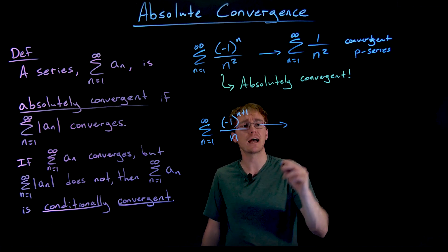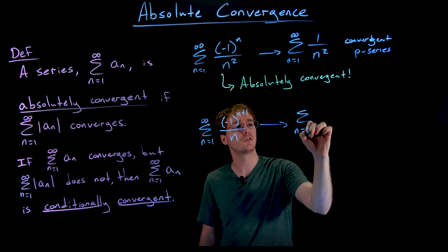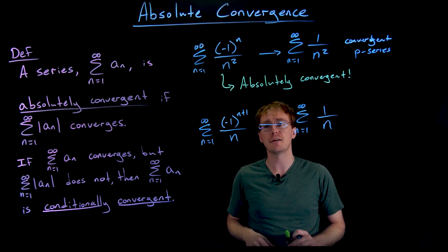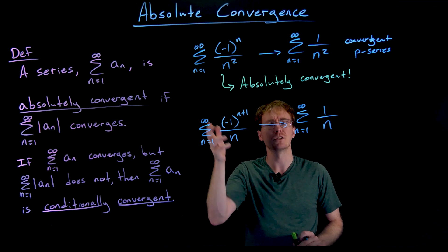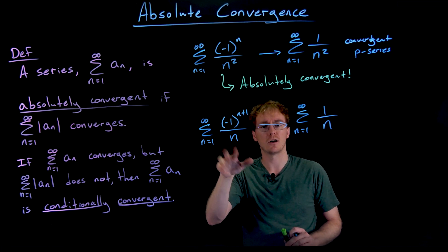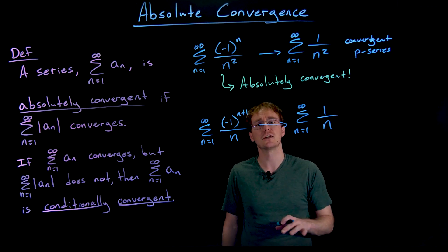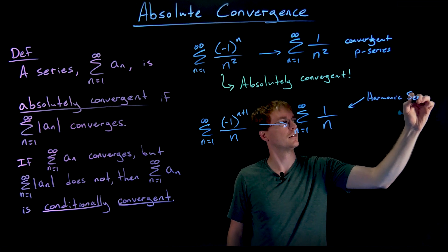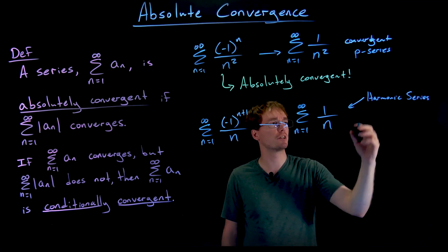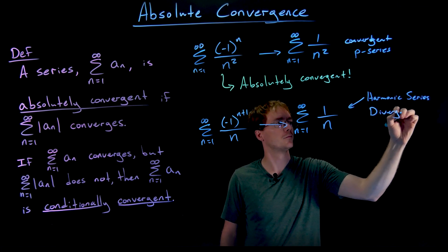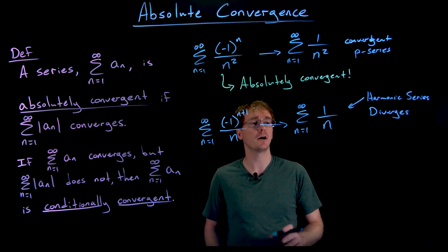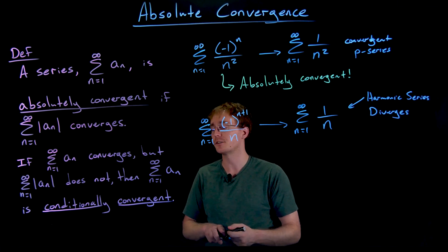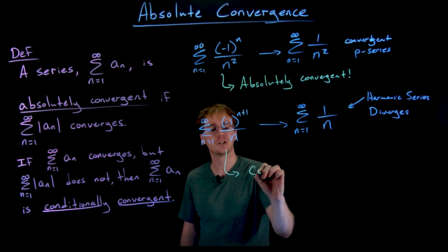However, if we look at the absolute value of the terms in our series, we get the sum from n equals 1 to infinity of just positive 1 over n. When we take the absolute value, the negative 1 power is always positive 1 and n is always positive, giving us the harmonic series. We know from earlier that the harmonic series diverges. Because the series made up of the absolute values diverges, the alternating harmonic series is conditionally convergent.